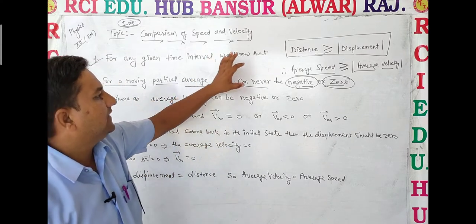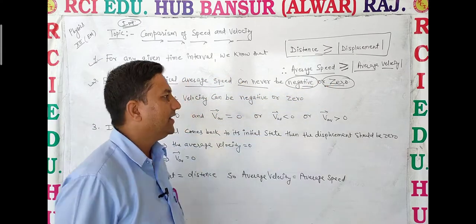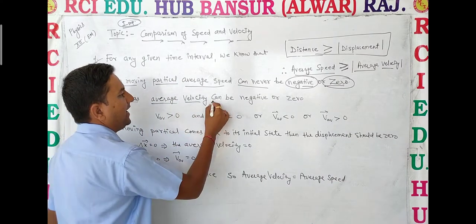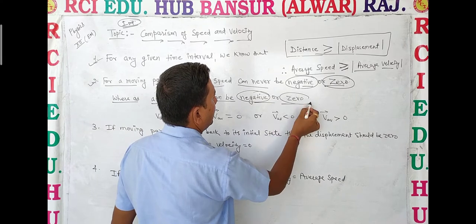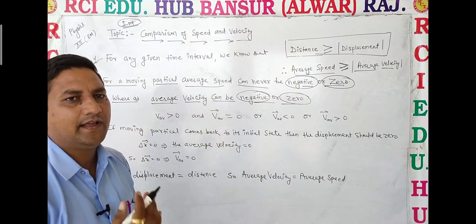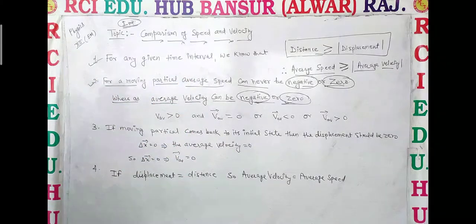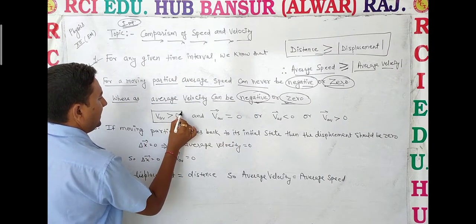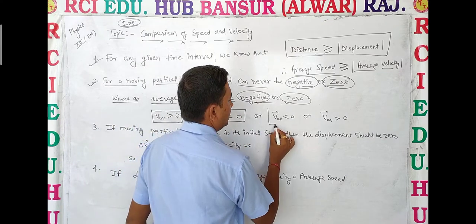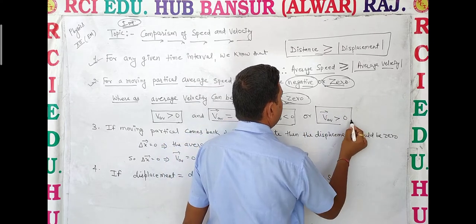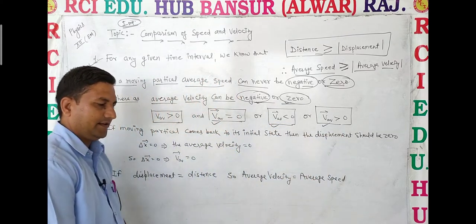Distance is never negative or zero, so speed is never negative or zero. Average velocity, however, can be less than zero or greater than zero — both are possible conditions.